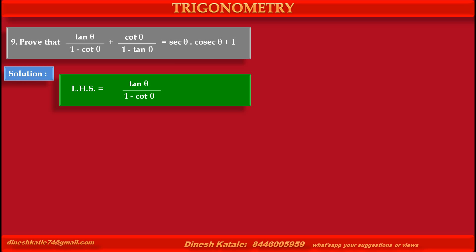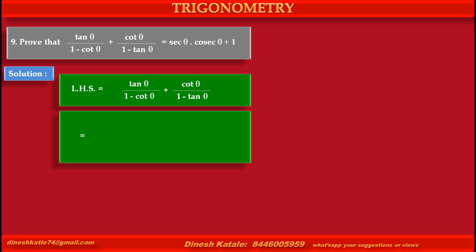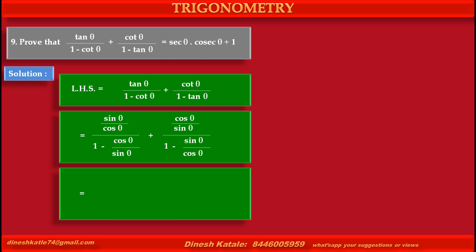Replacing tan θ by sin θ upon cos θ, and at the denominator replacing cot θ by cos θ upon sin θ. In the second term, replacing cot θ by cos θ upon sin θ, and at the denominator replacing tan θ by sin θ upon cos θ. The numerator of the first term becomes sin θ upon cos θ as it is.